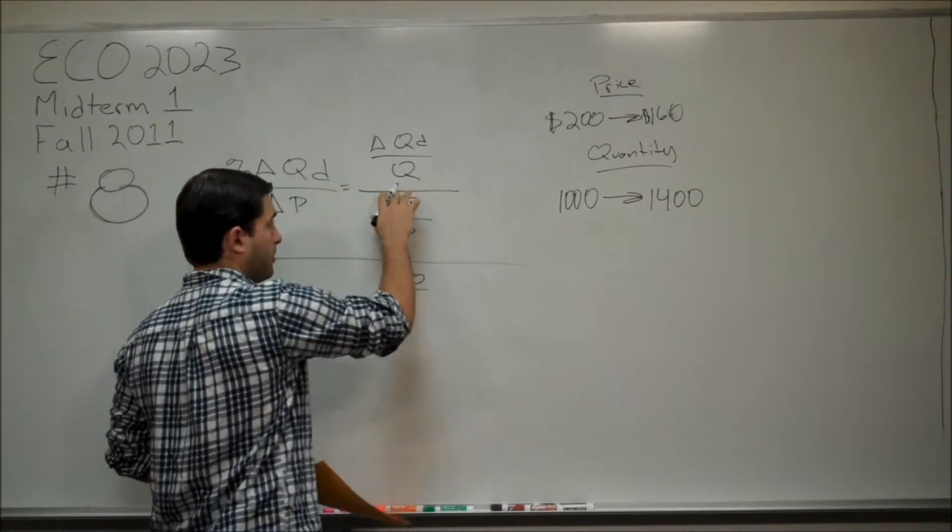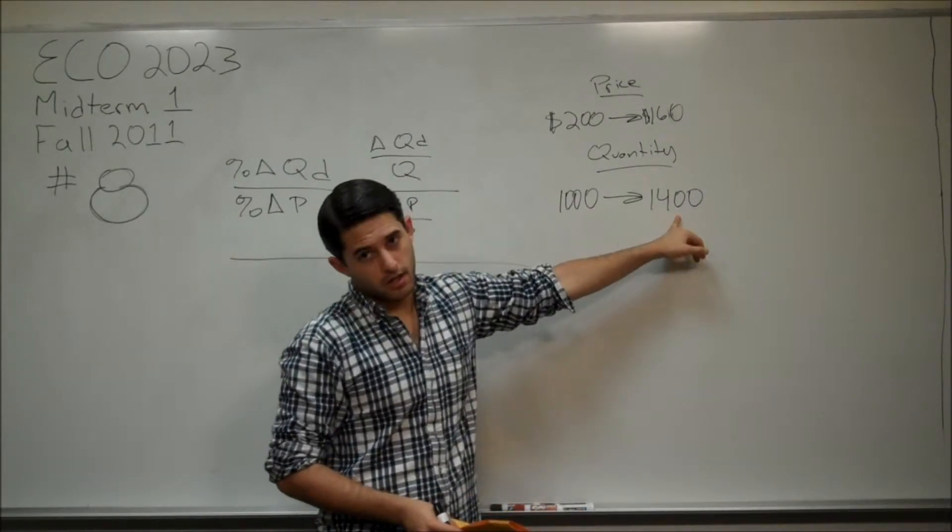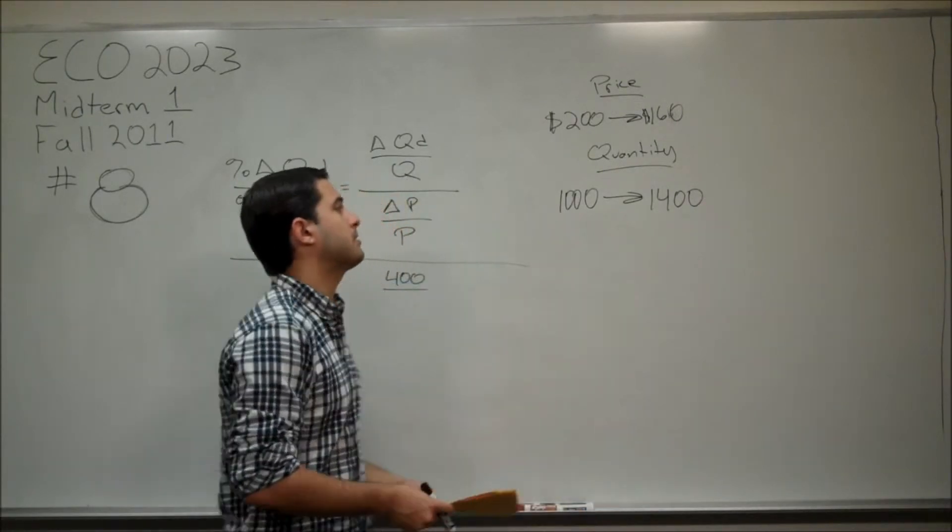Now, again, for this point, we pick the midpoint. So, we don't choose 1,000 or 1,400. We choose right in between and that's going to be 1,200.